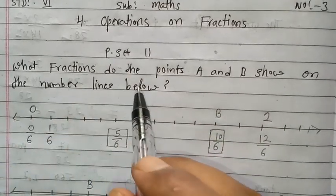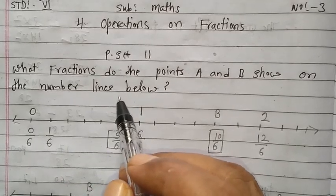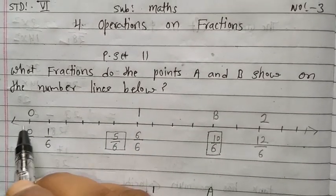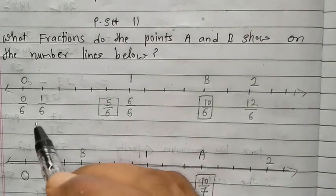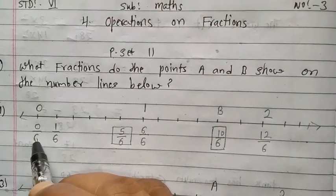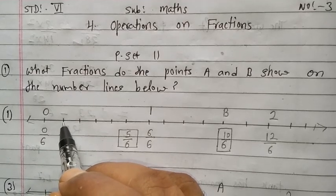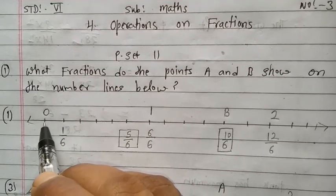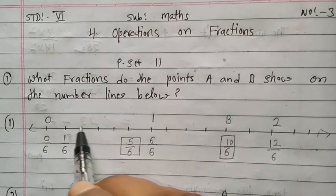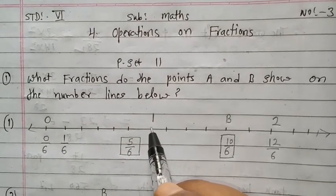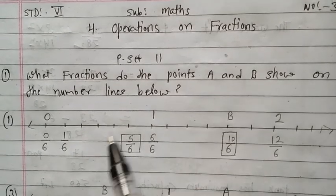First question: what fraction do the points A and B show on the number lines below? See question number 1 — this is showing the number line. Here we have 0 upon 6, then 1 upon 6. That means this one part is divided into 6 equal parts.